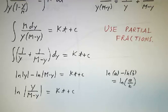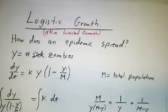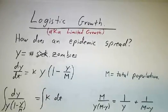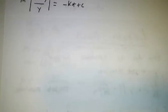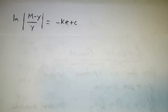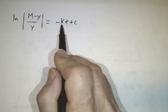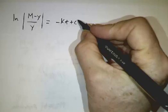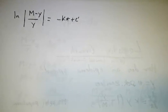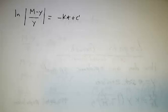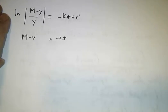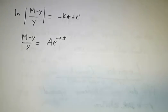And it's actually more convenient to talk not about the log of y over M minus y, but the log of M minus y over y. That's minus the log of y over M minus y, so we get minus kt. And if you want to be a stickler, it's a different constant than we started with. It's actually minus the original constant.